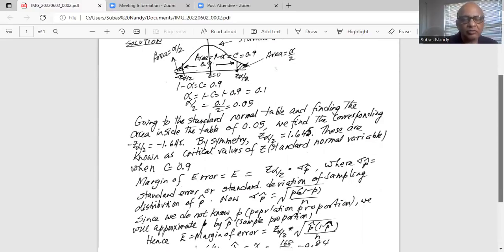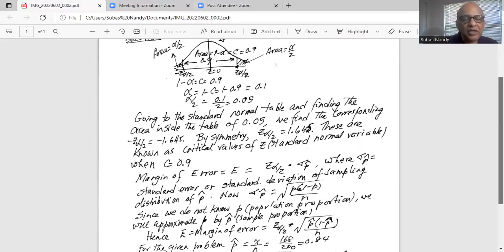Since we do not know p, which is the population proportion, we approximate it by p hat, which is sample proportion. So E margin of error is then given as Z alpha by 2 times square root of p hat times 1 minus p hat divided by n.